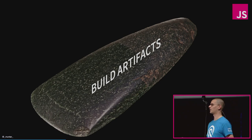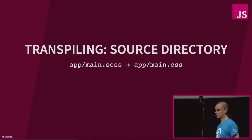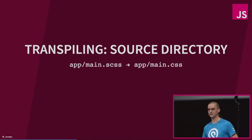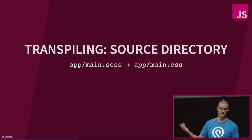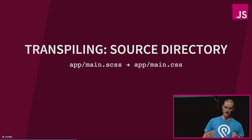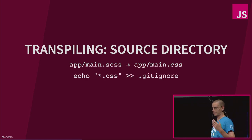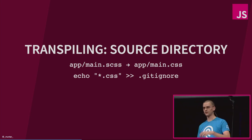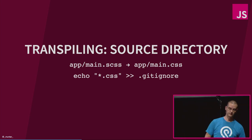Let's do a workflow setup of a project right now to show why this is complex. The simplest possible way you can do transpiling is to transpile your source code into the target code in the same directory — they're sibling files. So you have your main Sass file which gets compiled into your main CSS file. It's a sibling, easy to understand. So we're not interested in the build artifacts, so let's add a gitignore for CSS files in our source directory — this is what most people do.